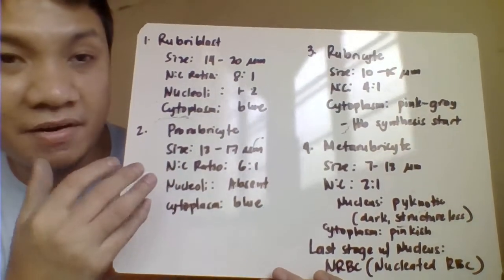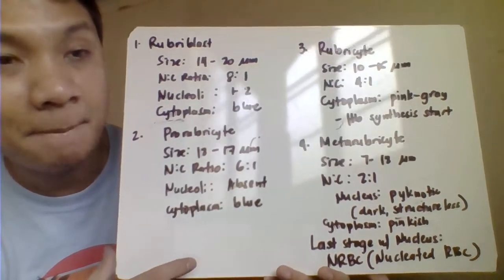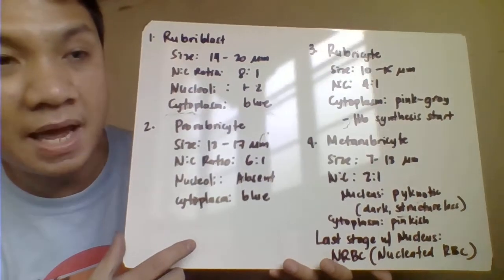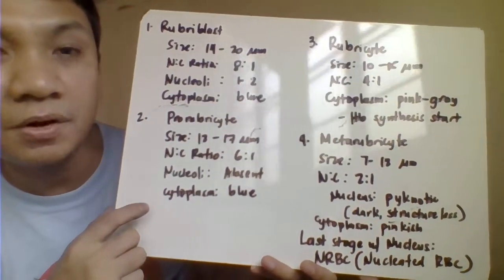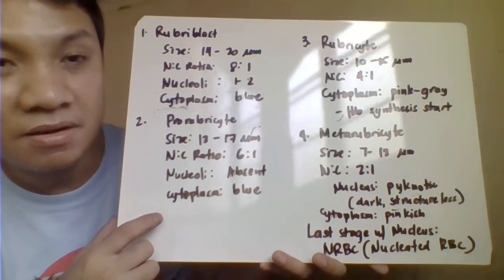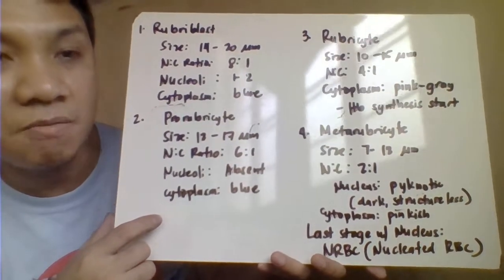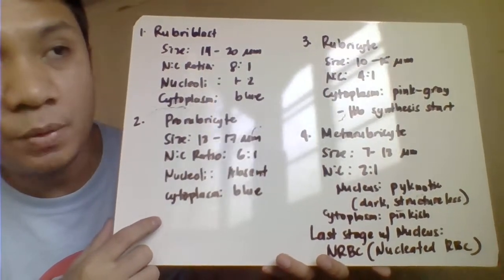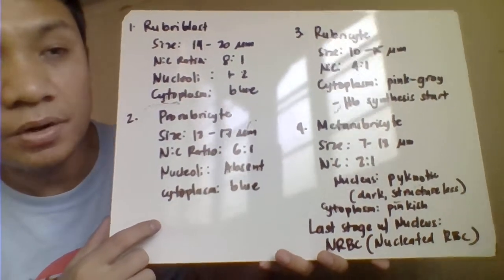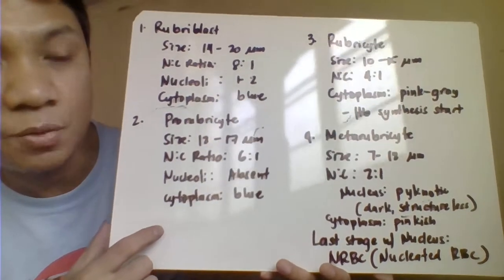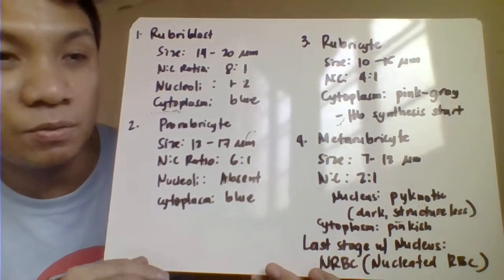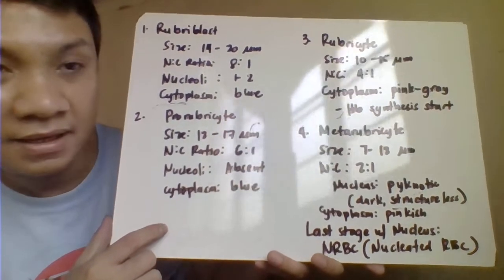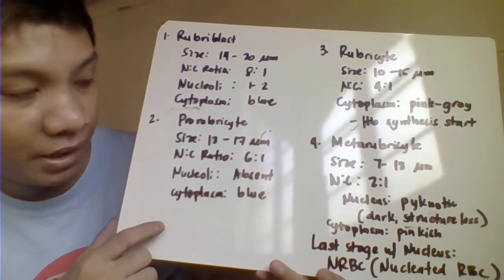The next stage is the prorubricyte, also known as basophilic normoblast or basophilic erythroblast. It measures 12 to 17 micrometers in diameter with a nucleocytoplasm ratio of 6:1, indicating the nucleus has become slightly smaller. Nucleoli are absent and the cytoplasm remains blue.